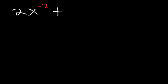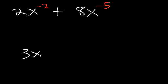If you were to receive an expression like 2x to the negative 2 plus 8x to the negative 5, what would you do to factor it? How can you take out the GCF, or the greatest common factor? Let's compare that example with this one: what would you do to take out the GCF?